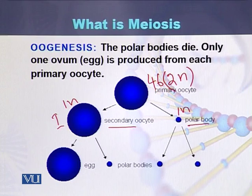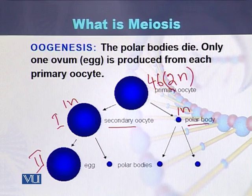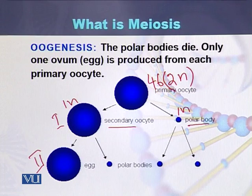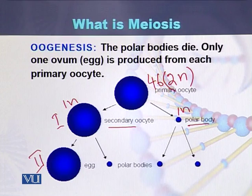Again, as a result of meiosis 2, the secondary oocyte will divide into 2 and the polar body will also divide into 2. This division in meiosis 2 is like mitosis. As a result of oogenesis, one primary oocyte is converted into 4 cells: 3 of them are called polar bodies while one of them is the egg. Polar bodies usually die, and the egg survives containing 23 chromosomes, or 1n.